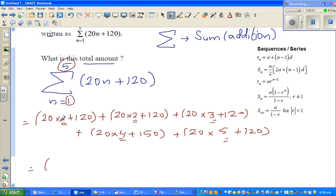Now you can simplify. This is 20 times 1 is 20 plus 120, which is 140. This is 40 plus 120 which is 160. This is 60 plus 120 which is 180. Can you see a pattern there? 140, 160, so even if you don't do the calculation, the next would be 200.